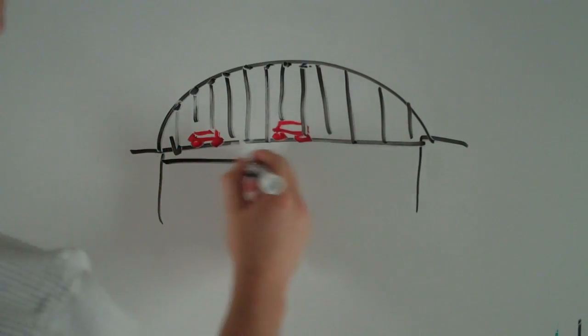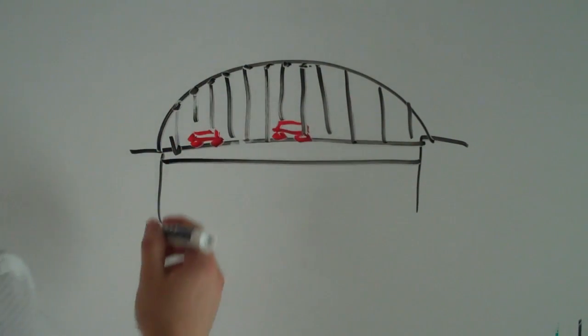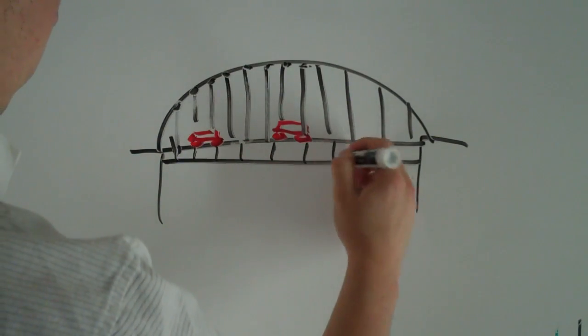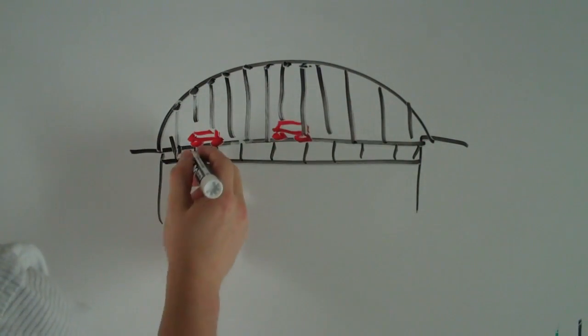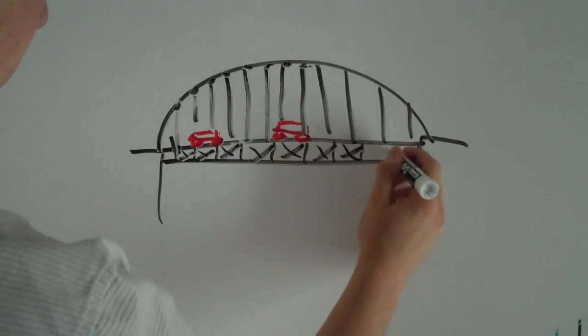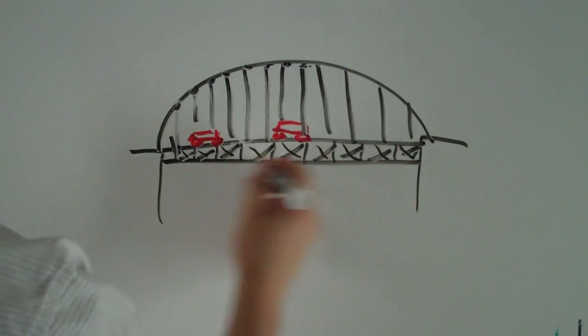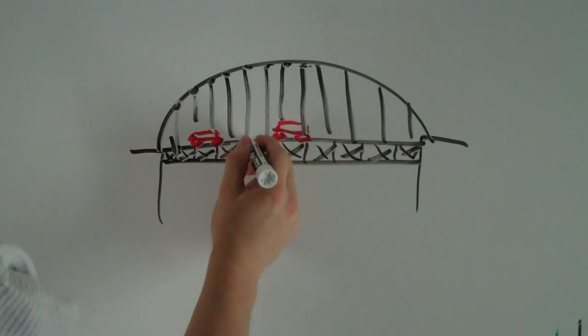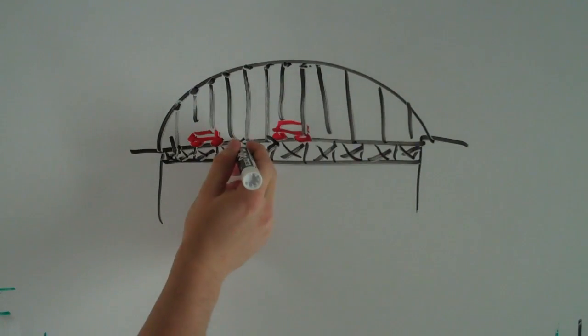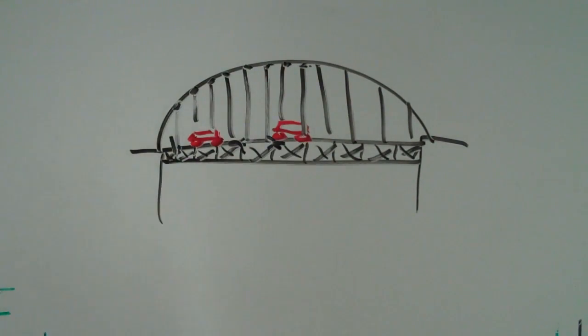And so what you can see a lot of times is that these roads also have sort of cross members at the bottom. The reason being is that these joints, I mean this whole member right here is going to want to sort of separate when weight's put on it. But the cross member pushes that member back into place.